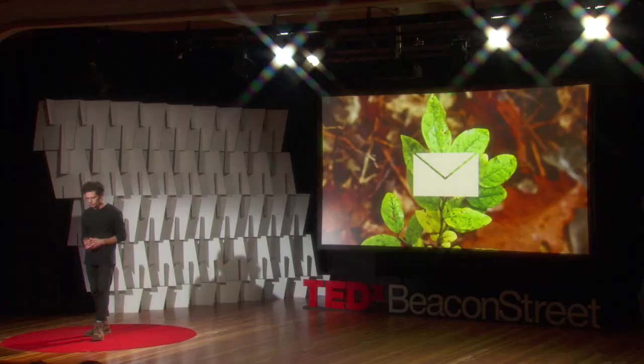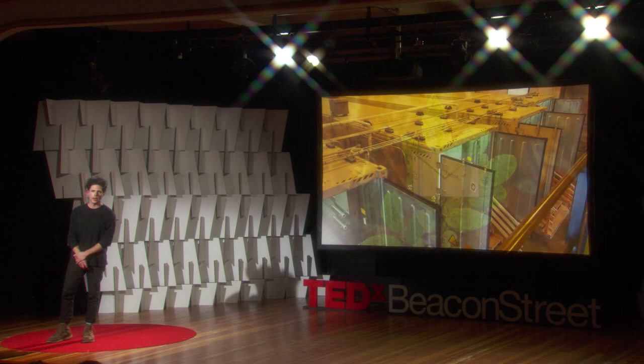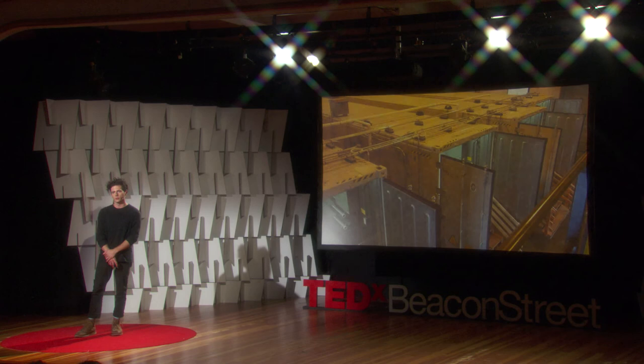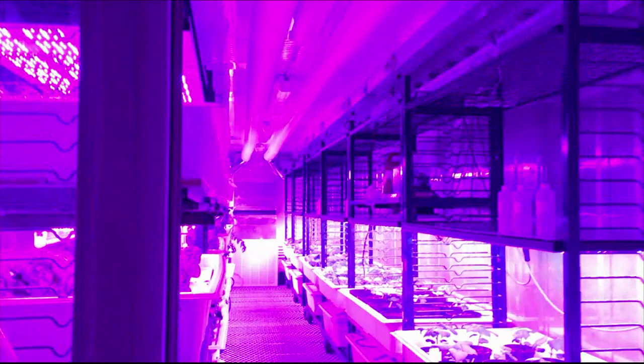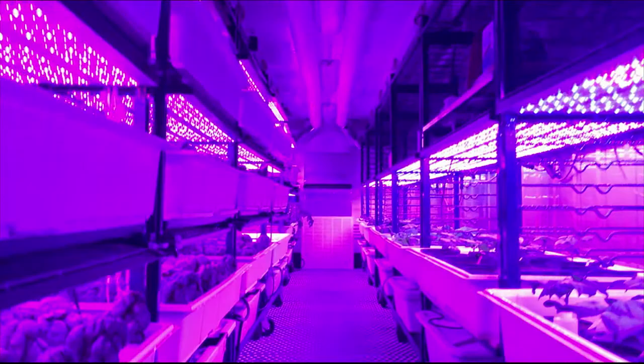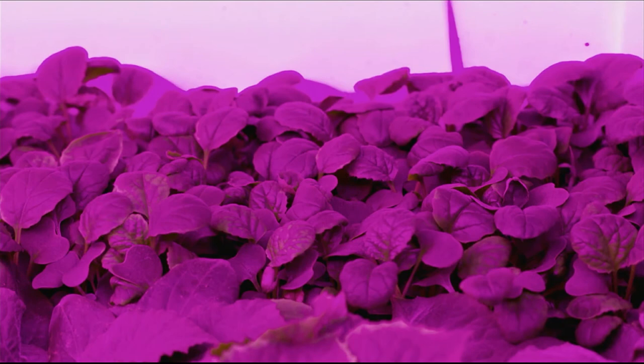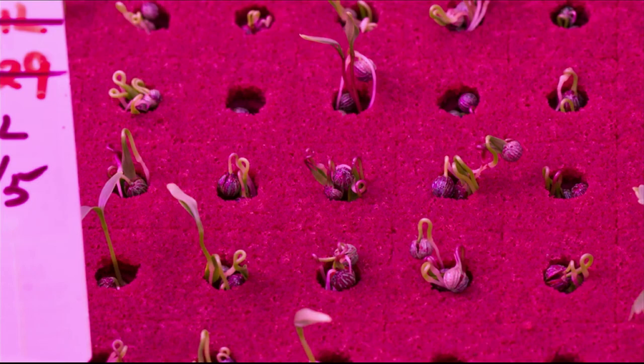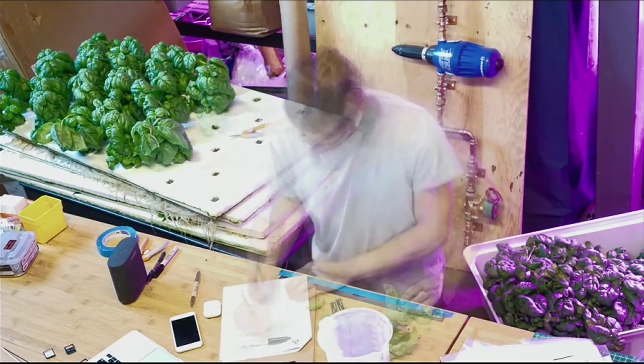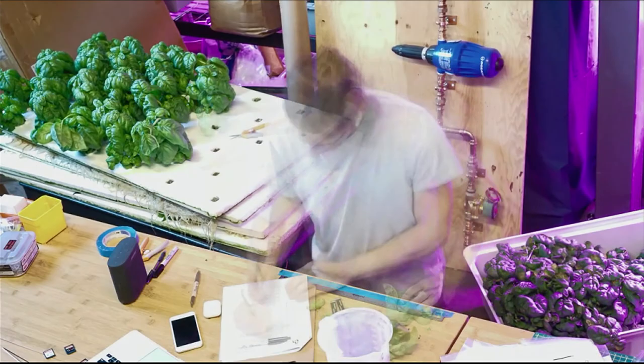This is our next generation of food computer — it's called the food server. I just harvested our first plants and data. This is an experiment I'm running on basil to see how UV light creates a tastier basil. These are seedlings I just germinated. And this is a new food computer we just built called the tree computer — we're building it for a candy company, but I'll save that for next year.